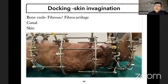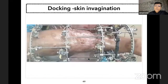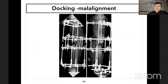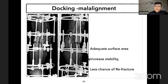One has to remove the invaginated skin, open the canal, remove fibrous tissue from bone ends, and once docked the skin heals beautifully without scarring. Docking site malalignment must be addressed pre-operatively with biplanar hinges and washers, or at the time of surgery with multiplanar hinges. It is very essential to address docking site malalignment so there is adequate surface area in contact, good stability, and less chance of refracture.